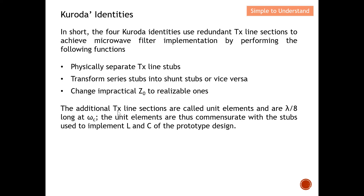The additional transmission line stubs are called unit elements, and they are lambda over 8 long at the cutoff frequency. The unit elements basically compensate with the stubs used to implement L and C of the prototype design.